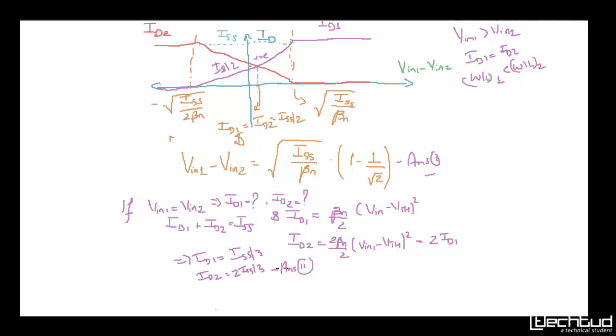So the current will be ISS by 3. So the current will be 1 by 3rd in first one. And second one will be 2 ISS by 3, so current will be double.